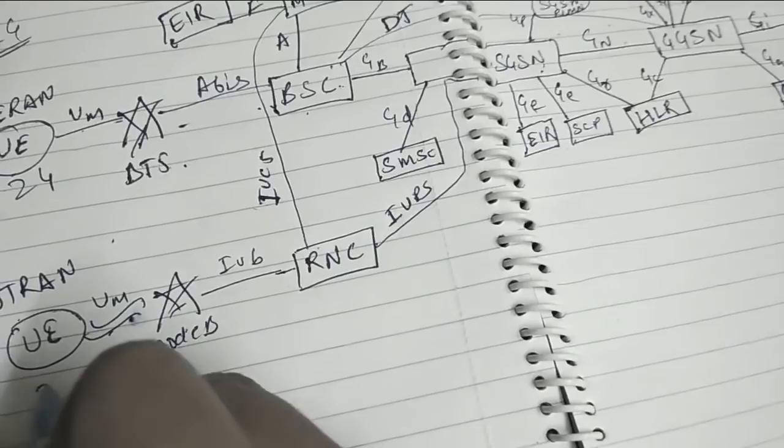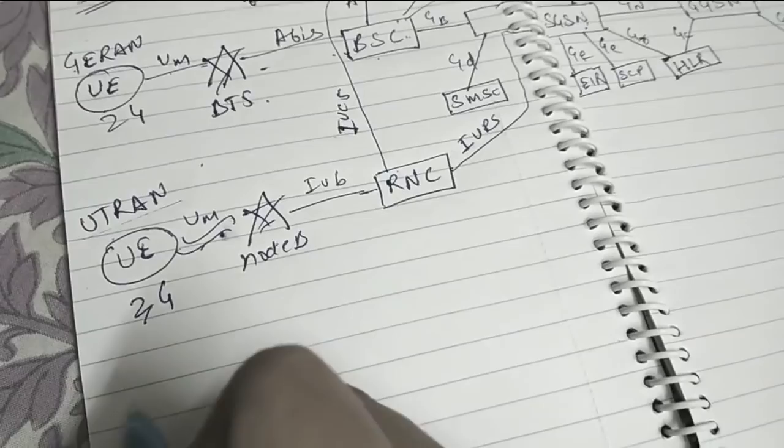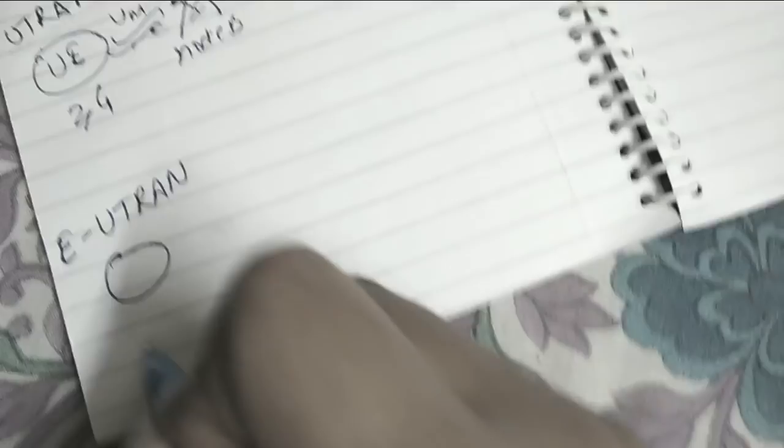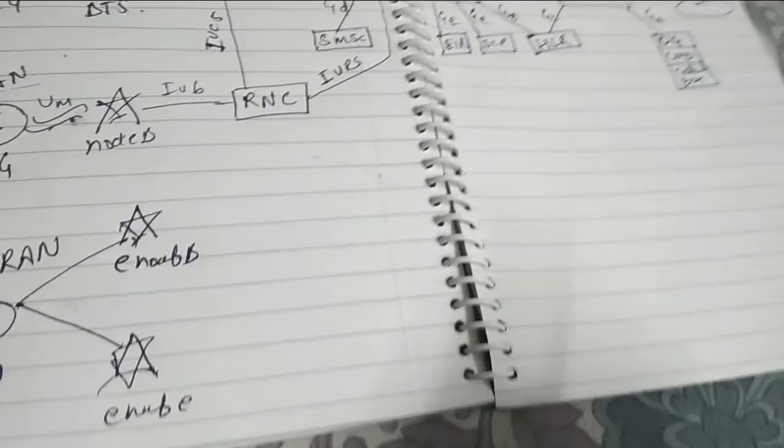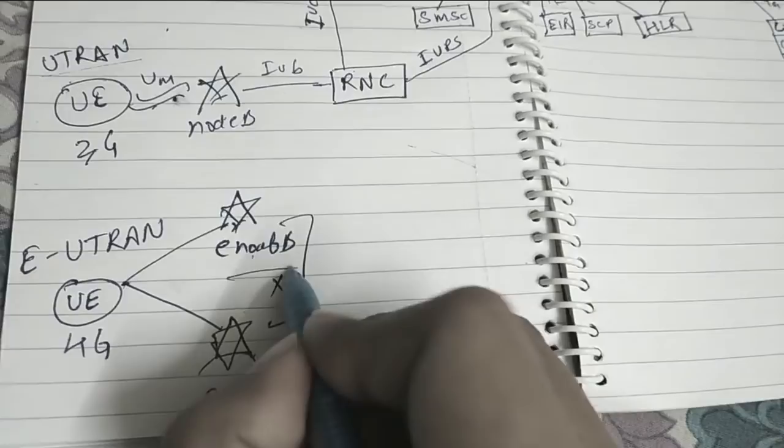This is UTRAN for 4G. We call it E-UTRAN. We call it 4G. Here also we have a User Equipment. Here I will draw two eNode B. This UE will be connected to both the eNode B. Now there is a X2 interface between the eNode B and eNode B which is not there in 3G or 2G part. This is very helpful in the case of handover.